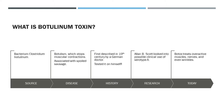So what is botulinum toxin? To start, it's produced by a bacterium that bears the same name, Clostridium botulinum, and causes the disease botulism, which stops muscular contractions. The way in which the toxin achieves this is by blocking the release of acetylcholine from the synaptic cleft of the nerve endings where the muscles are, which inhibits the muscles from contracting.